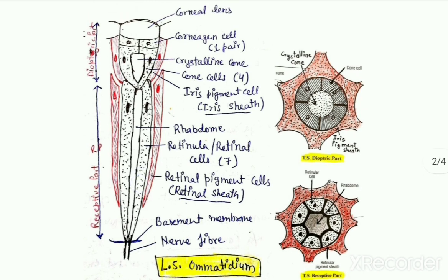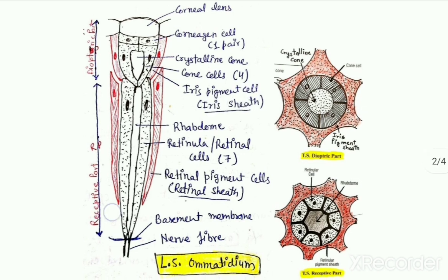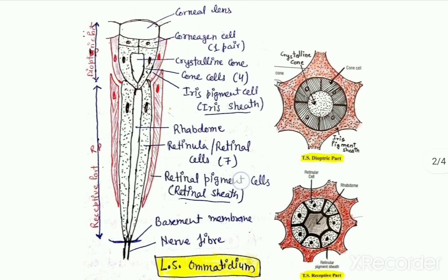Each ommatidium is optically isolated from adjacent ommatidia by thick pigment sheaths made up of pigment cells. The pigment sheath covering the dioptric part is termed the iris pigment sheath, and the pigment sheath covering the receptive part is termed the retinal pigment sheath. These pigment sheaths are capable of absorbing all the light rays which fall upon them.